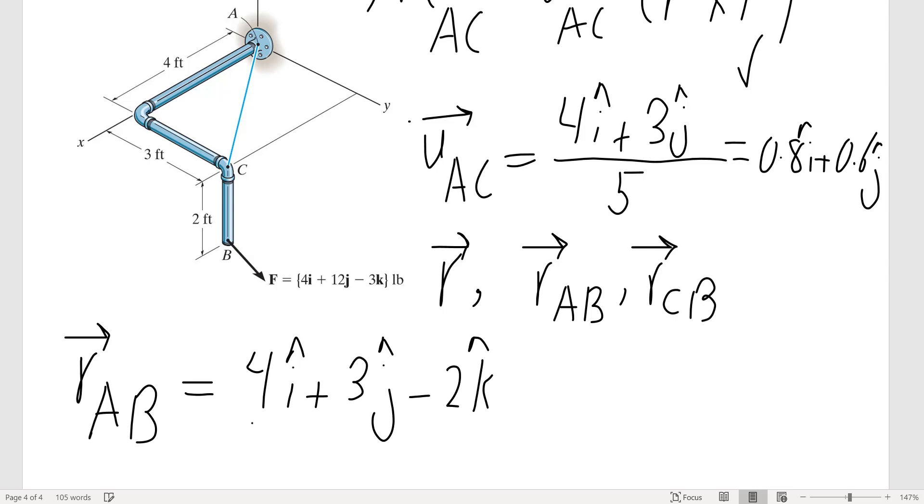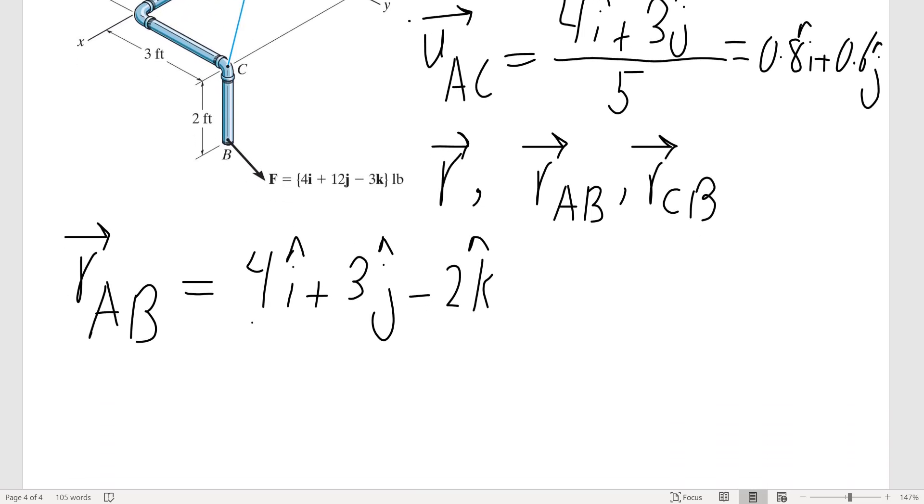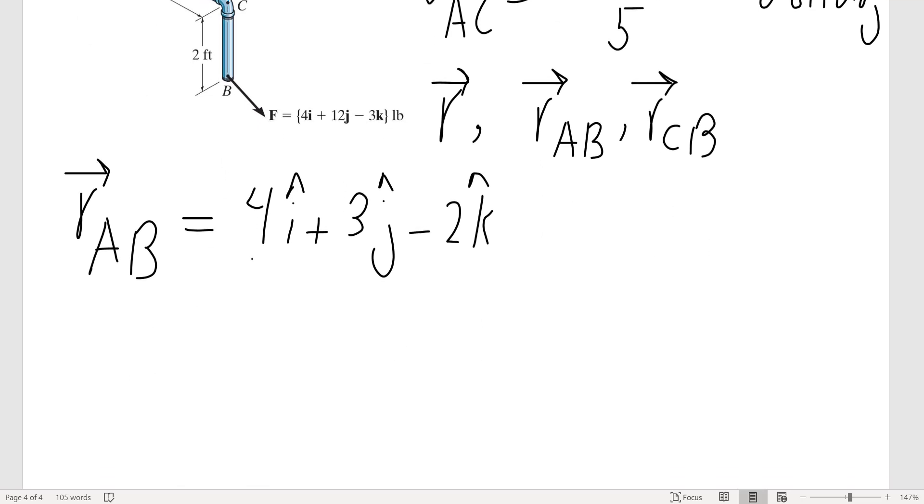Remember, we don't need to find the unit vector, so we don't divide it by its magnitude. So now I have all the vectors that I need. For MAC, the first row would be the unit vector of the axis that I found: 0.8, 0.6, and there was no k component.